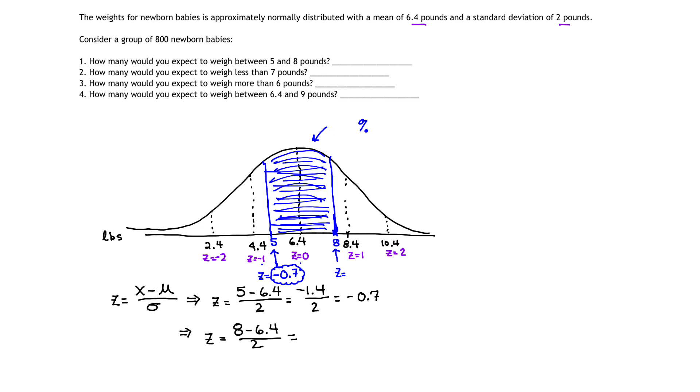And taking 8 minus 6.4, I get 1.8. And 1.8 divided by 2 is actually 0.9. So on the right side, the z-score that corresponds to 8 pounds is the z-value 0.9. And that makes sense, again, because this is almost at 1 for standard deviation away.